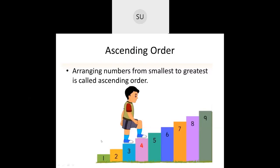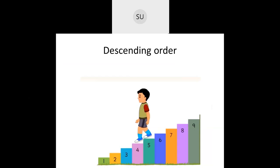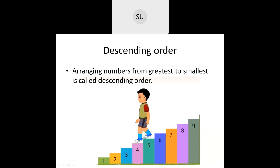Descending order is when you move from a greater number to a smaller number — arranging numbers from the greatest to the smallest. Starting from nine: 9, 8, 7, 6, 5, 4, 3, 2, 1. If the boy is moving from the largest number to the smallest, he's climbing down — and climbing down is called descending. Now let's start with today's topic: cardinal and ordinal numbers.